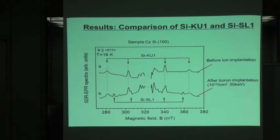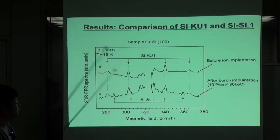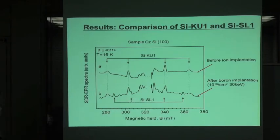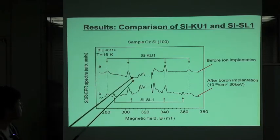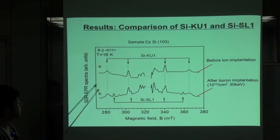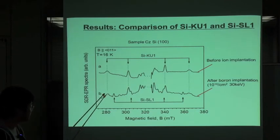We need to check whether SI-KU1 is the same as SL1 or not. In order to check this result, we check the SDR-EPR signal of the Czochralski-grown silicon and the irradiated Czochralski-grown silicon. This graph shows the result. Line A corresponds to the before-implanted silicon sample, and line B corresponds to the irradiated silicon sample.